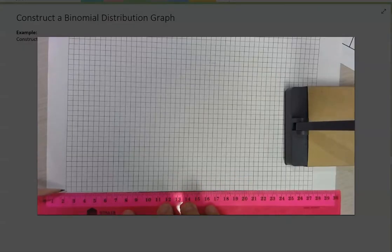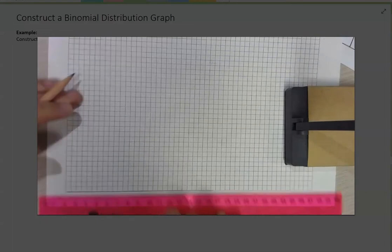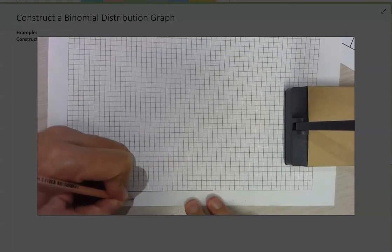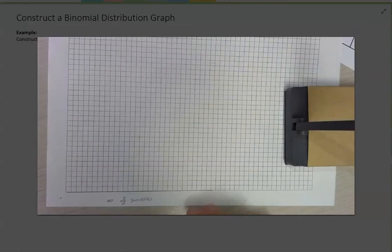So graph paper, ruler, this is going to be my x-axis and it's going to be the number of successes. Now we're doing 20 trials, so we could have somewhere between zero successes and 20 successes. Okay, so I've put all of those in here.